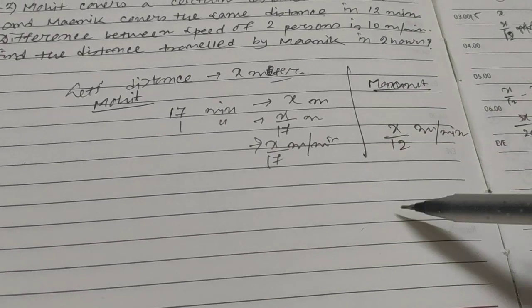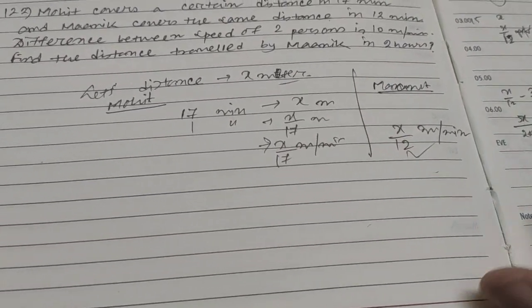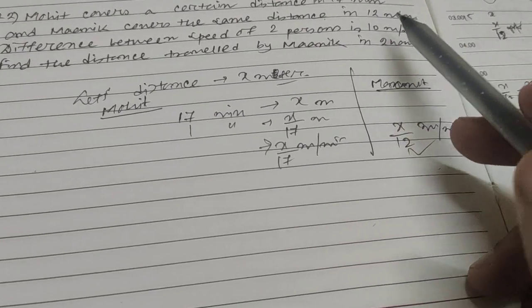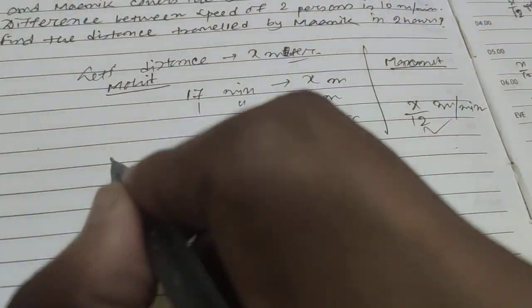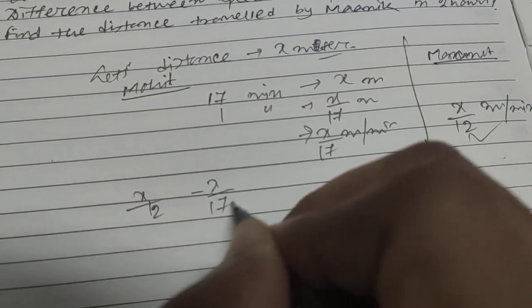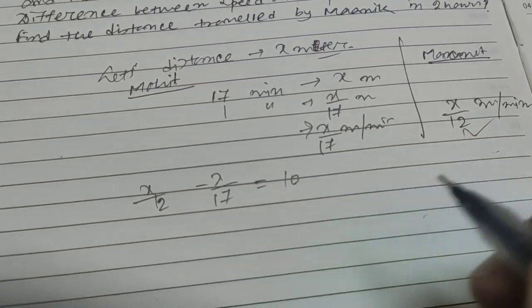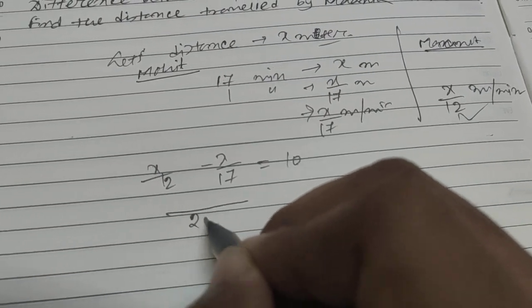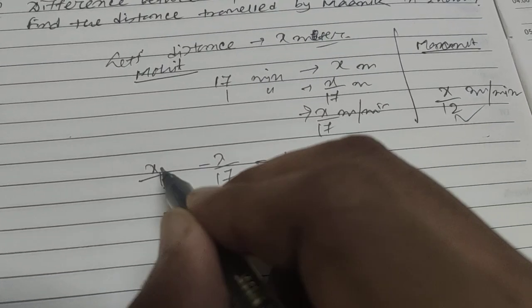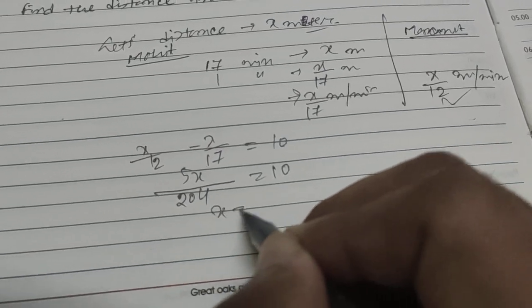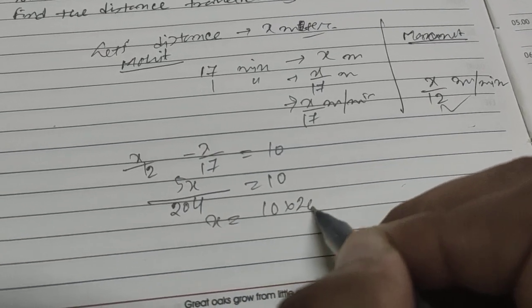The speed difference is 10 meters per minute, so x by 12 minus x by 17 equals 10. The LCM is 204, and 17x minus 12x means 5x will be this one, so x will be 10 into 204 divided by 5, which is 408.